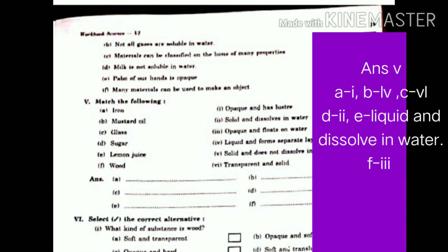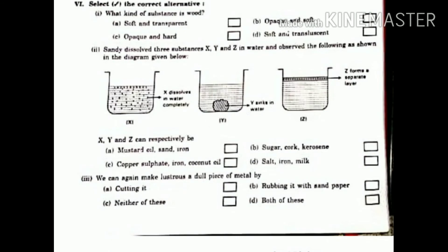Fifth. Match the following. Iron. Opaque and has luster. Mustard oil. Liquid and forms separate layer in water. Glass. Transparent and solid. Sugar. Solid and dissolve in water. Lemon juice. Liquid and dissolve in water. Wood. Opaque and floats on water.